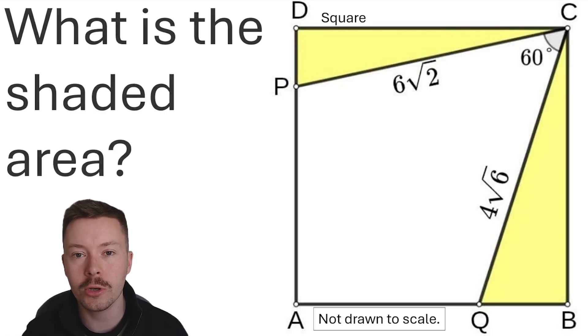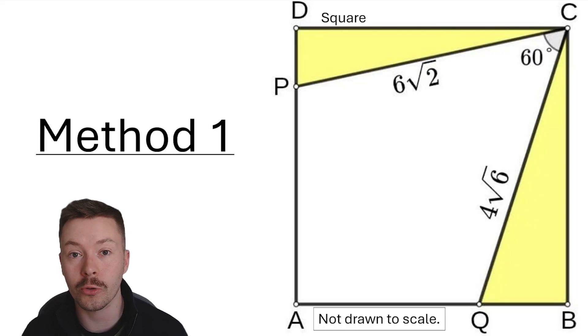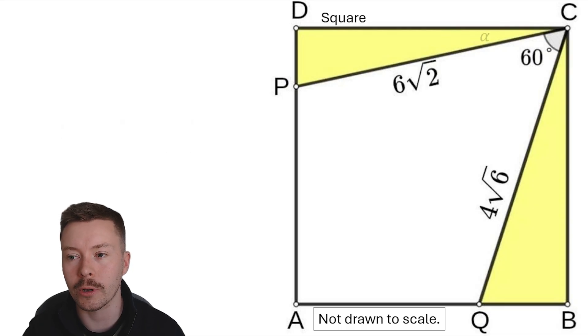The first thing is to say that I've got two methods to show you for this. Method 1, I'm going to start by labelling some of the angles, so I'm going to label this one alpha and this one beta.